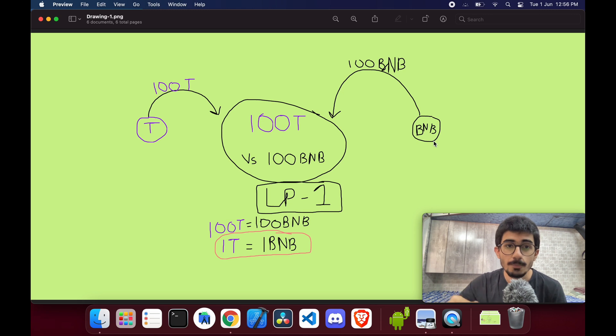So now I've created a liquidity with 100 tokens and 100 BNBs. So this liquidity is created and my value of token is also set simultaneously. If you see, 100 tokens are now worth 100 BNB, that means one token is worth one BNB. If I had put in 150 BNB, then that would mean one token is worth 1.5 BNB. So that's how you set your price and that's how you create the liquidity pool.